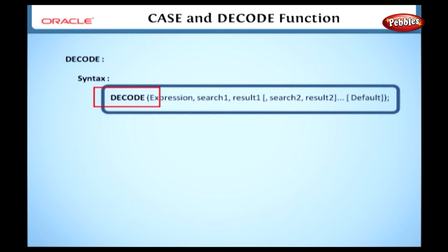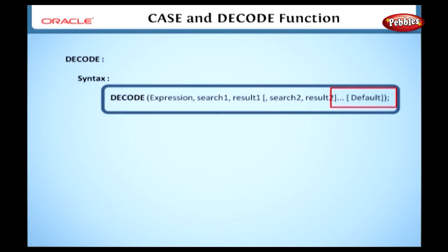In this syntax, DECODE is a keyword to specify the Decode function. Expression is the value to compare. Search 1 is the value that is compared against the expression. Result 1 is the value returned if the expression is equal to the search. Default is optional — if no matches are found, the Decode function will return the default value. If the default is omitted, the Decode function will return null if no matches are found.